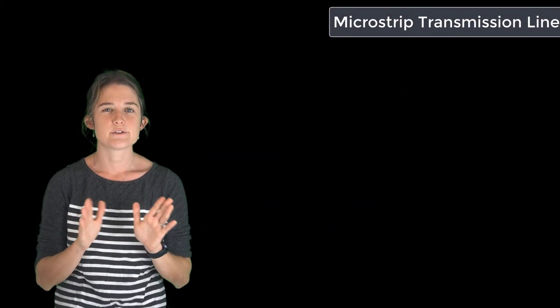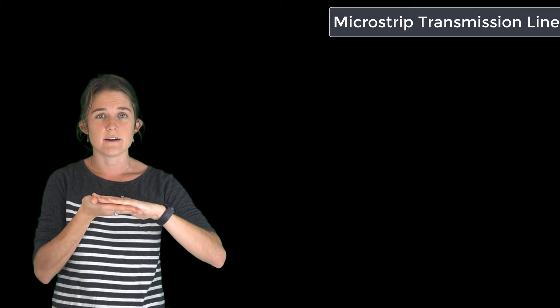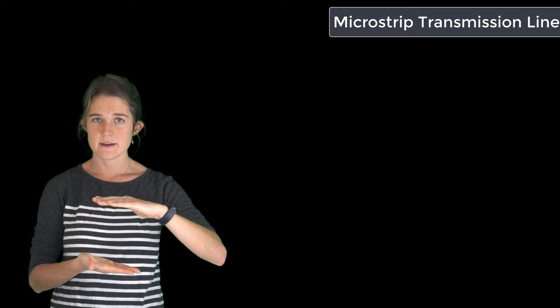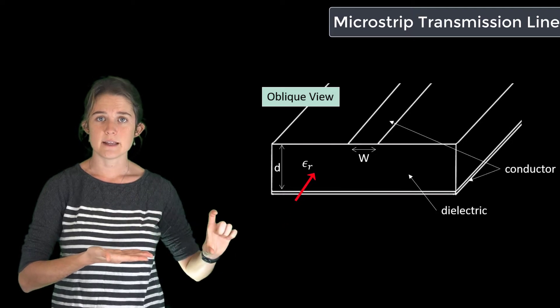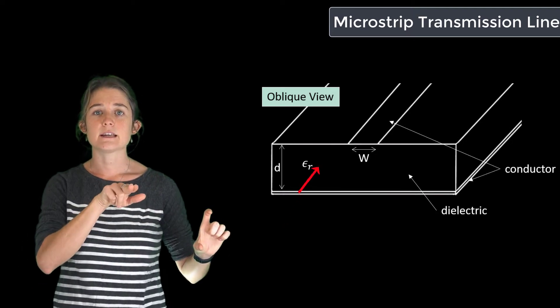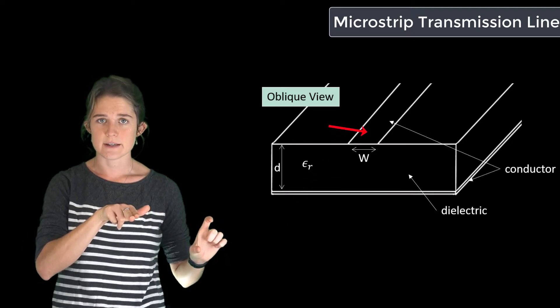A microstrip transmission line is sort of like a planar approximation of the lower half of a coax. It's composed of a conducting plane, which is covered in a layer of dielectric, and a second conducting trace sits on top of the dielectric.